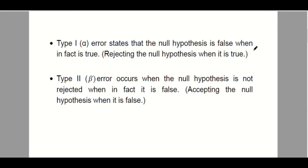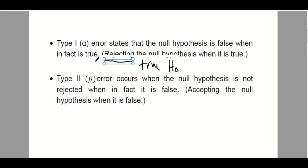We'll discuss type 1 and type 2 errors in hypothesis testing. A type 1 error states that the null hypothesis is false when in fact it is true. So in a type 1 error, we reject the true null hypothesis — the null hypothesis is true, but our decision in hypothesis testing says it is false, so we committed a type 1 error.